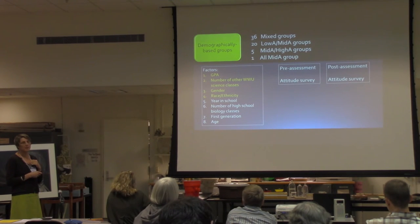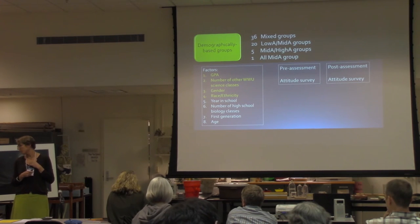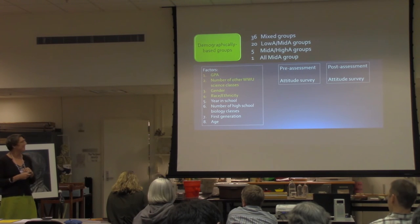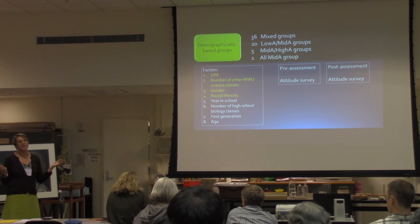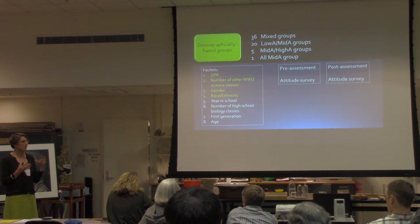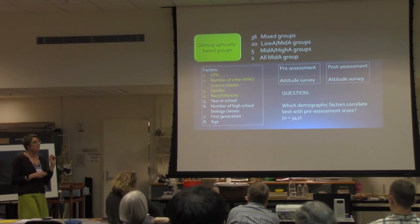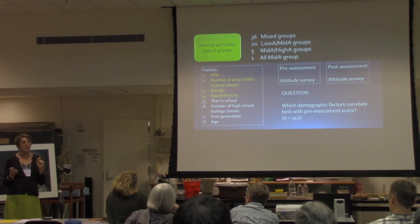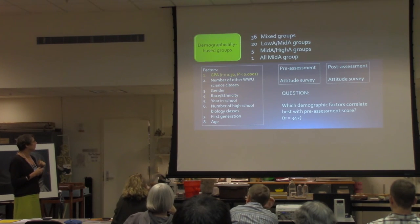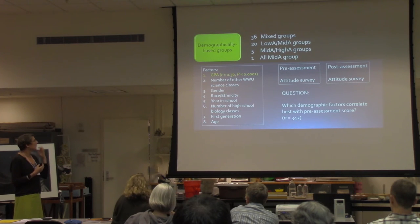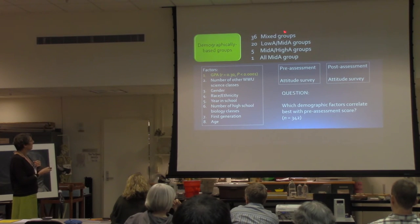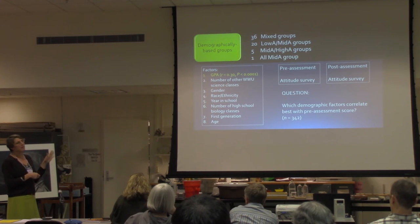This study is ongoing and can be observed in action at Arntzen 100 or Frasier 4. We will be giving the post-assessment and attitude survey to assess learning gains. One finding we can already report: of the demographic factors examined, only GPA correlated with pre-assessment score. This means GPA alone could potentially be used to assign students to groups in lieu of a pre-assessment, and importantly, we have no all-low aptitude groups this quarter, which is a good outcome.